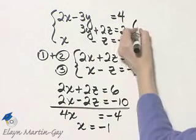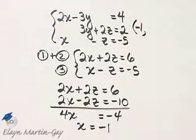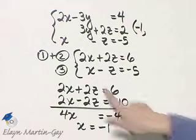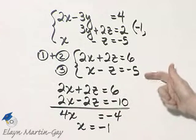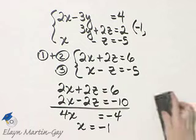So I have an x value. It looks like we have one ordered triple solution. The x value is negative one. How can we find the corresponding z value?